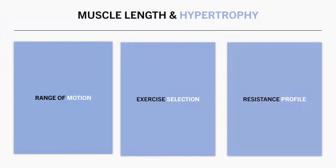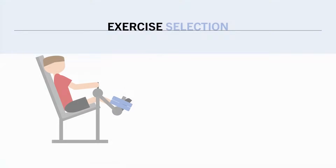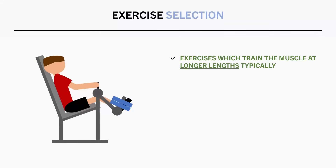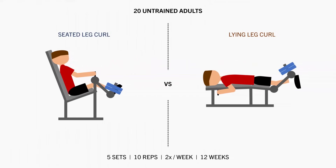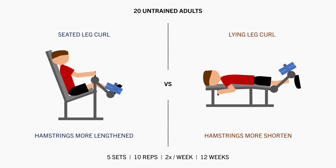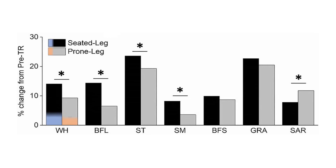Next, let's look at the influence of muscle length manipulated via exercise selection. We tend to find that exercises which train the same muscle in a more lengthened position seem to produce a little more muscle growth. For example, this study compared the effects of performing seated versus lying leg curls on hamstrings hypertrophy. Seated leg curls train the hamstrings in a more lengthened state since they are being lengthened from the hip due to the seated position, whereas lying leg curls train them in a more shortened state. It was found that the hamstrings saw overall slightly greater increases in muscle volume from the seated leg curls.